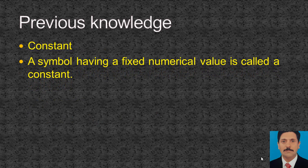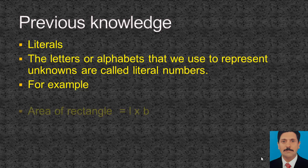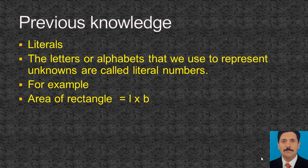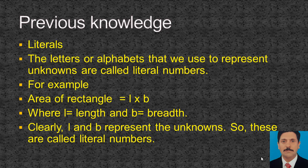Constant: a symbol having a fixed numerical value is called a constant. For example, 5 and 11 are constants. Literals: the literals are alphabets that we use to represent unknowns; they are called literal numbers. For example, the area of a rectangle equals length multiplied by breadth. Here L equals length and B equals breadth. Clearly, L and B represent the unknowns, so these are called literal numbers.